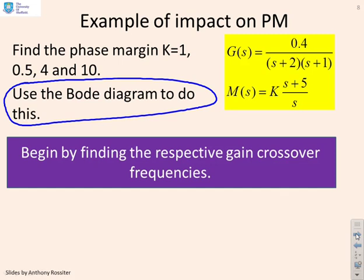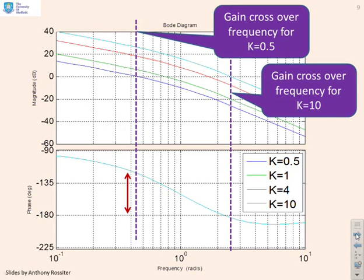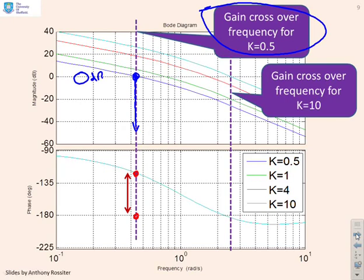The technique is: find the gain crossover frequency, then find the phase margin from it. For k = 0.5, the gain crossover frequency is where the gain crosses 0 dB; we follow that frequency down to the phase plot, and the phase margin is the distance above the minus 180° line — readable by inspection. For k = 10 (the light blue plot), the gain crossover frequency moves to a new location, and in this example the phase margin is now negative.